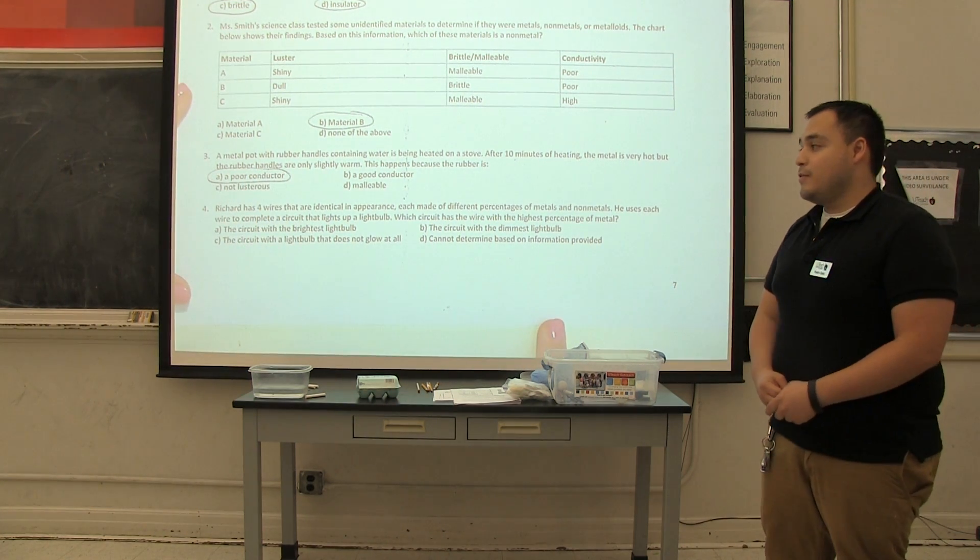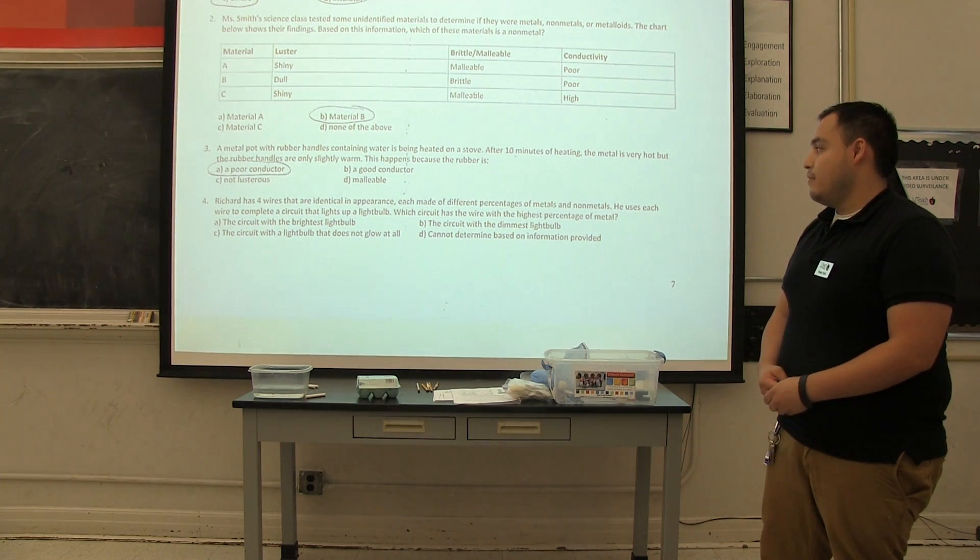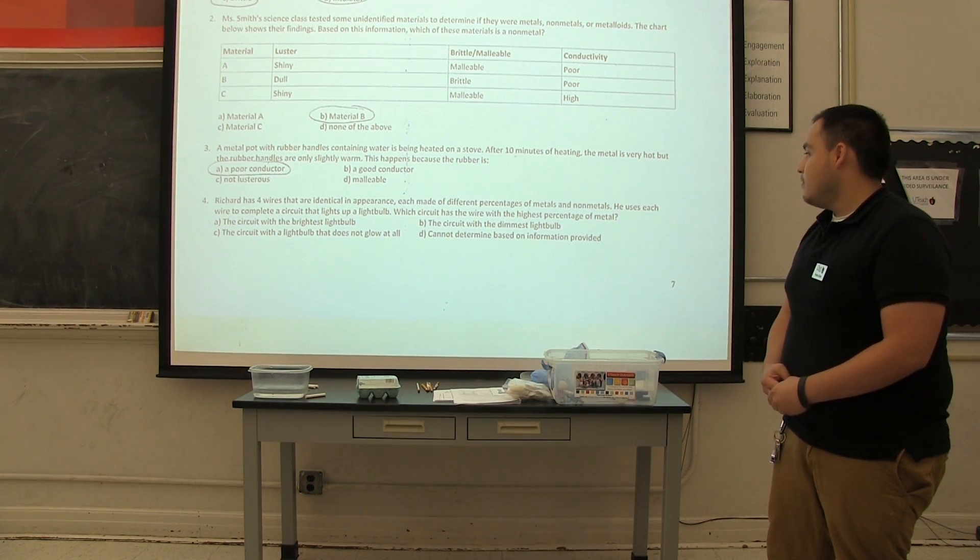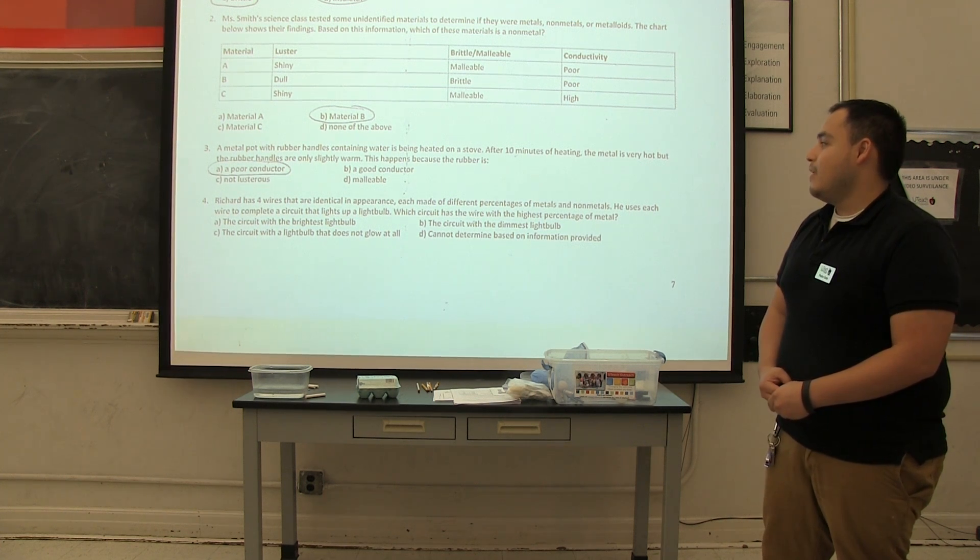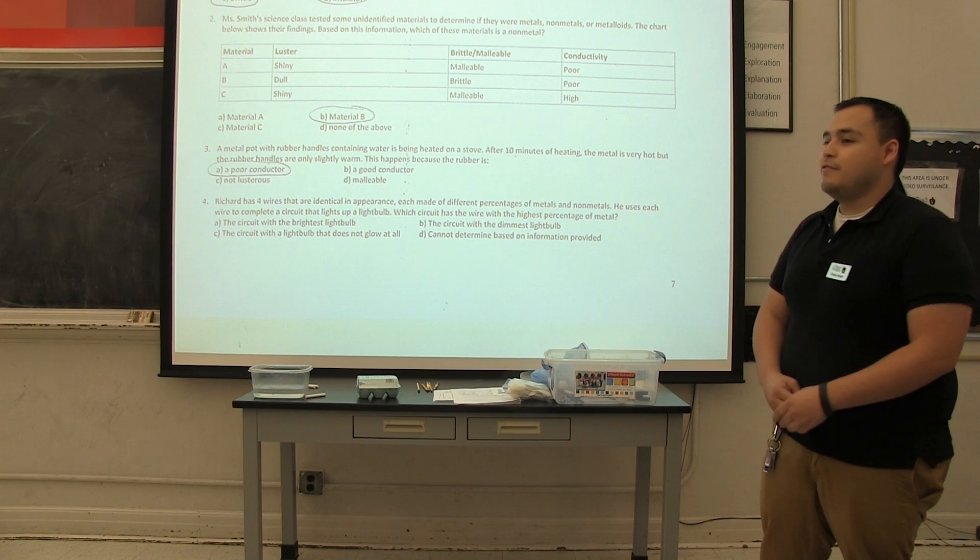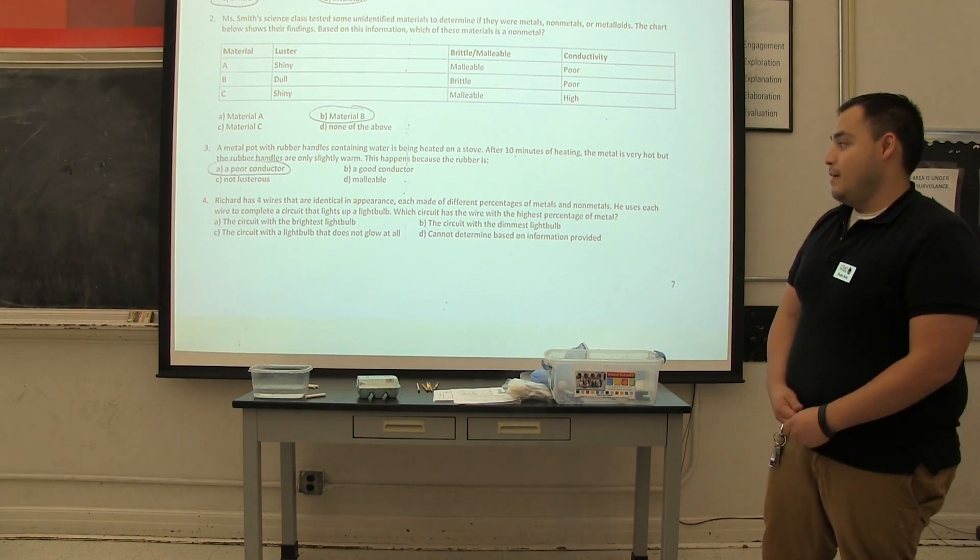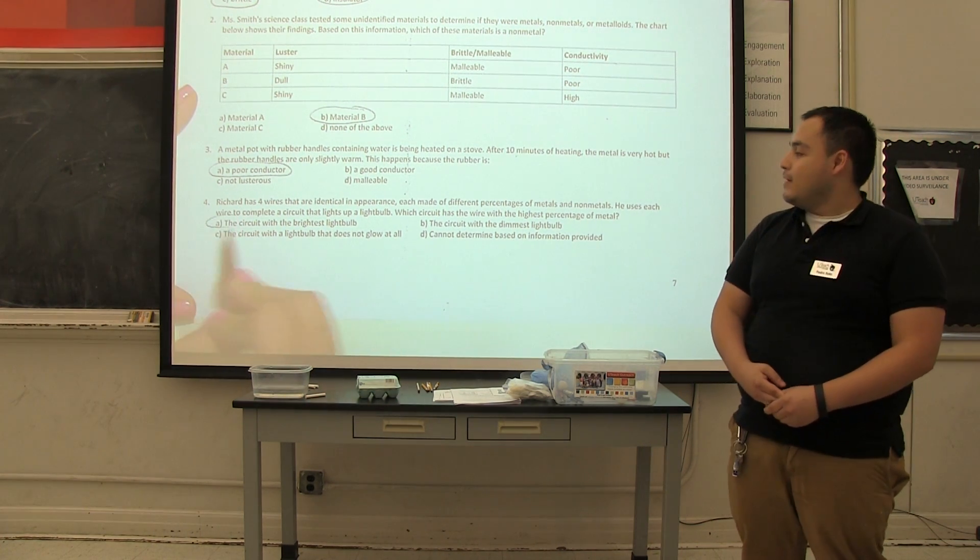So now for the final question. Richard has four wires that are identical in appearance, each made of different percentages of metals and non-metals. He uses each wire to complete a circuit that lights up a light bulb. Which circuit has the wire with the highest percentage of metal? A. A, the circuit with the brightest light bulb. That is correct.